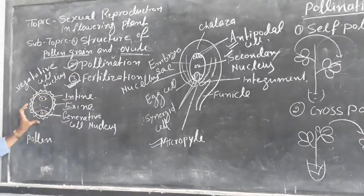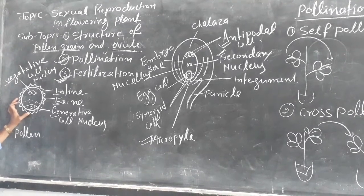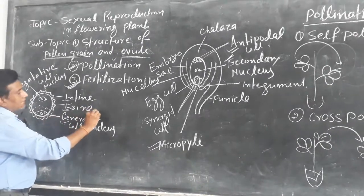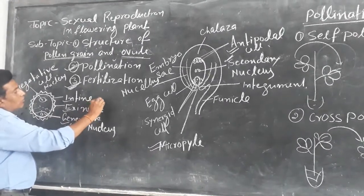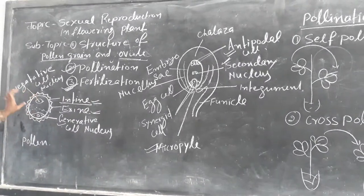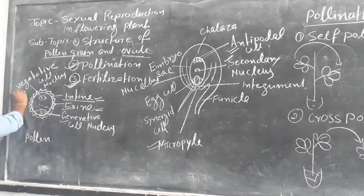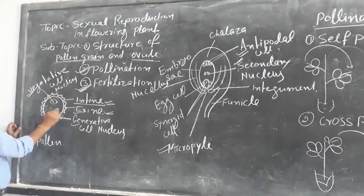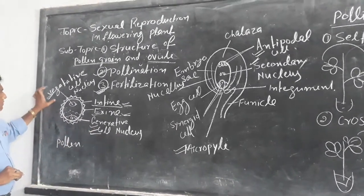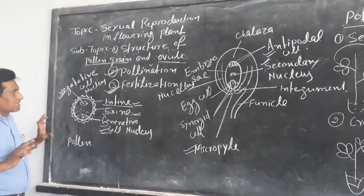Pollen grain is a spherical structure and it has a hard coating. Its coating is made up of two layers. The first outer layer is called exine and the inner layer is called intine. Now, there are two cells present inside the pollen grain. The first cell is called the vegetative cell and the second cell is called the generative cell. The vegetative cell produces the pollen tube and the generative cell takes part in fertilization.